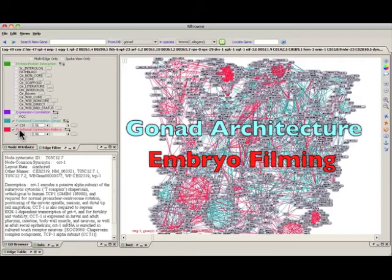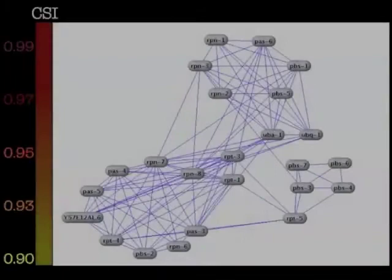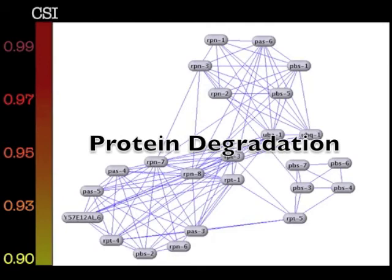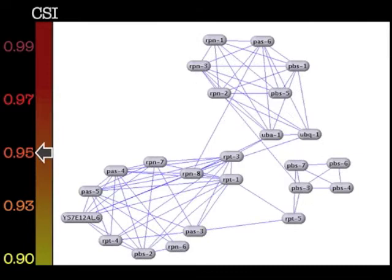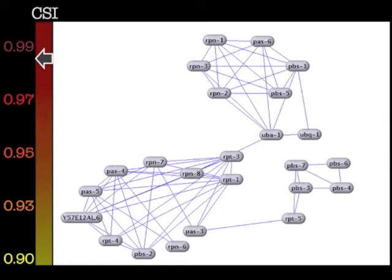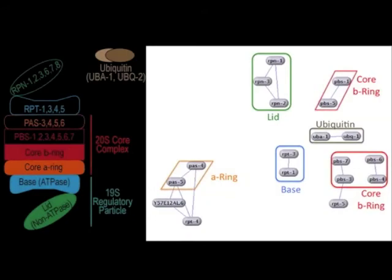Connections based on protein-protein interactions and expression correlation can also be displayed. nBrows can also be used to display a region of the network centered on genes of interest. In this example, the region containing genes involved in protein degradation. At a low CSI threshold of 0.93, all of the genes implicated in protein degradation are linked to each other. As the CSI threshold is increased, the connections that remain reflect increasing phenotypic similarity until at the very high CSI of 0.99, only genes with the most similar phenotypes remain connected. In the protein degradation region, these highest CSI connections are between genes whose products are in specific proteasome subcomplexes.